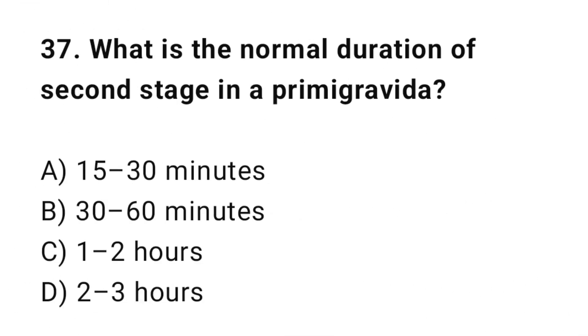Question 37. What is the normal duration of the second stage in a primigravida? The correct answer is C: 1 to 2 hours.